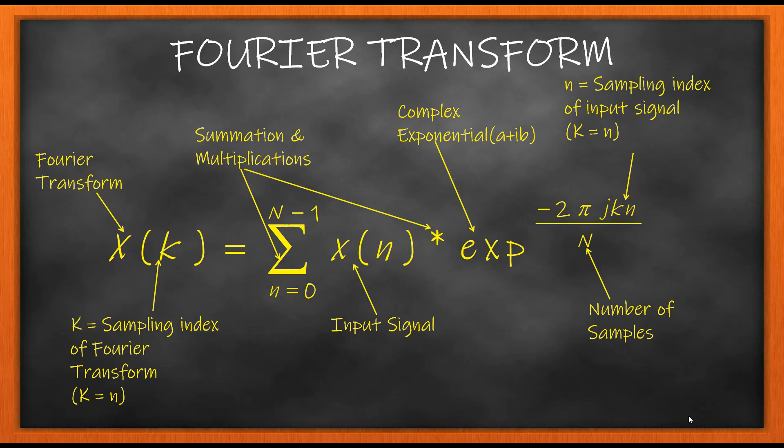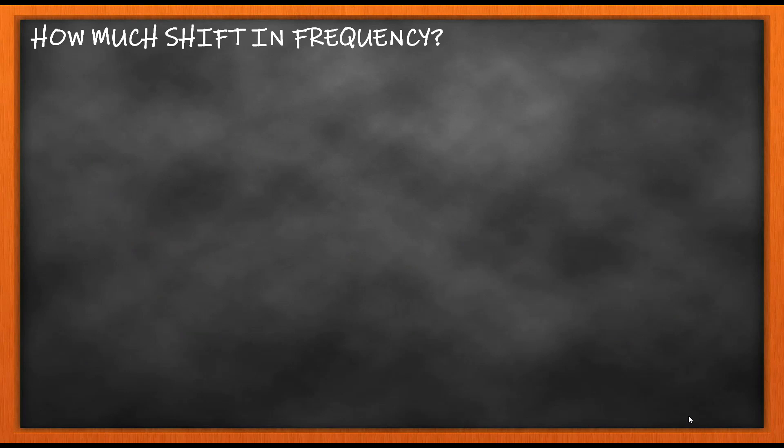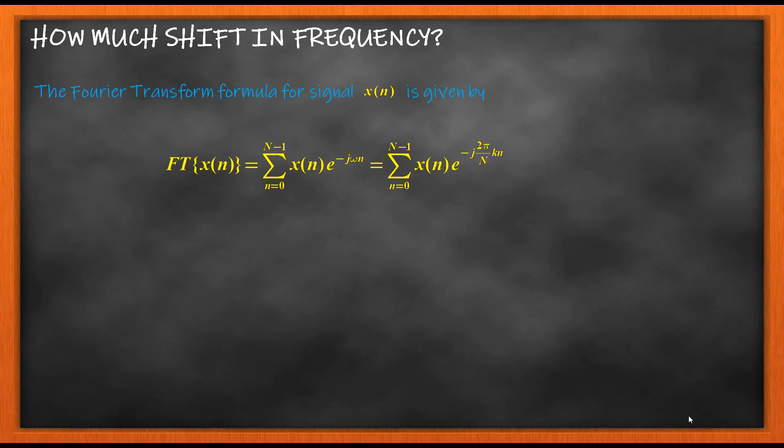The Fourier transform equation is: x of k equals sigma of x of n times exponential minus 2 pi j k n over N. We will be using this to prove the frequency shifting property. How much shift in frequency? The shift is k0, which is obtained from omega-0.